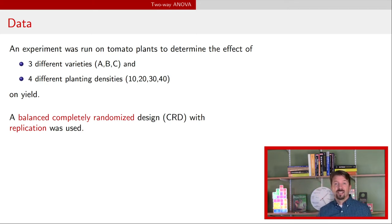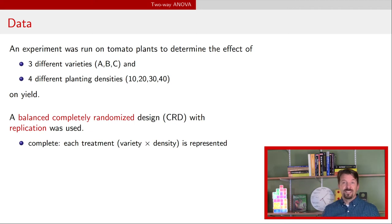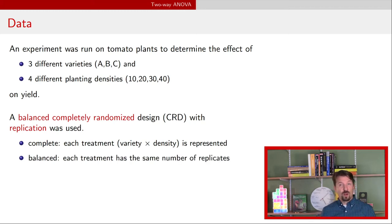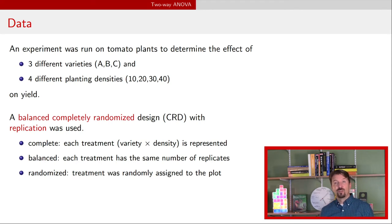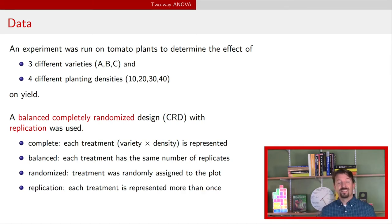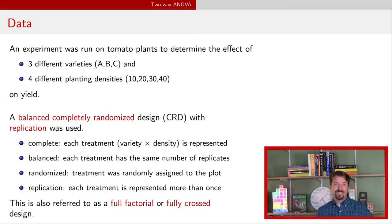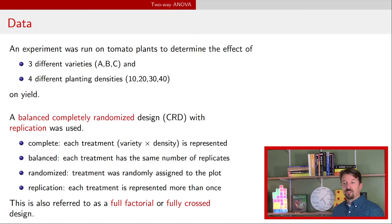We had a previous video all about CRD design. To start, it's balanced and has replication. 'Complete' means that each treatment combination — a combination of variety and density — is present in the experiment. 'Balanced' means the number of replicates of each treatment combination is the same. 'Randomized' means we randomly assign the levels of treatment to each plot. 'Replication' means each treatment combination appears more than once. This is often referred to as a full factorial or fully crossed experiment.